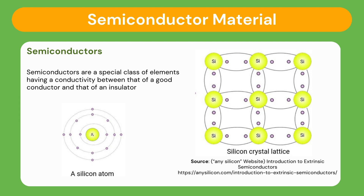Intrinsic semiconductors are semiconductor materials that have a really reduced number of impurities. Essentially, it's a pure semiconductor material that is as pure as can be made through available modern technology. To better understand semiconductor materials, remember that a silicon atom in a silicon crystal has four electrons in its valence shell, and it creates covalent bonds with neighboring atoms.